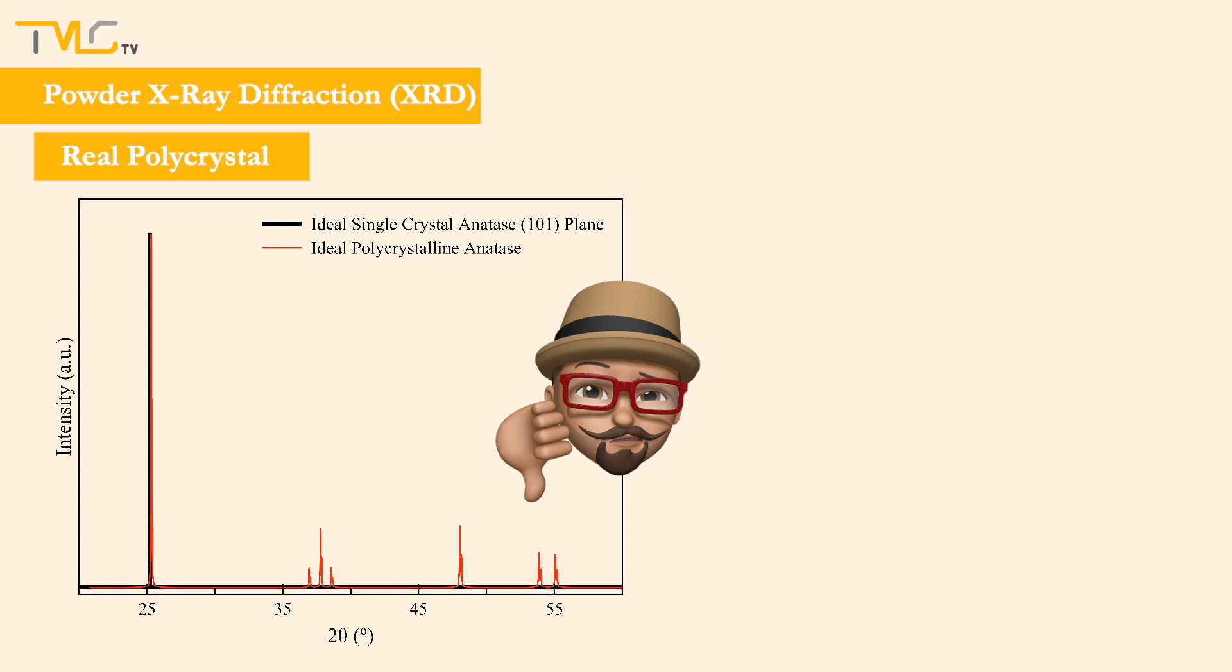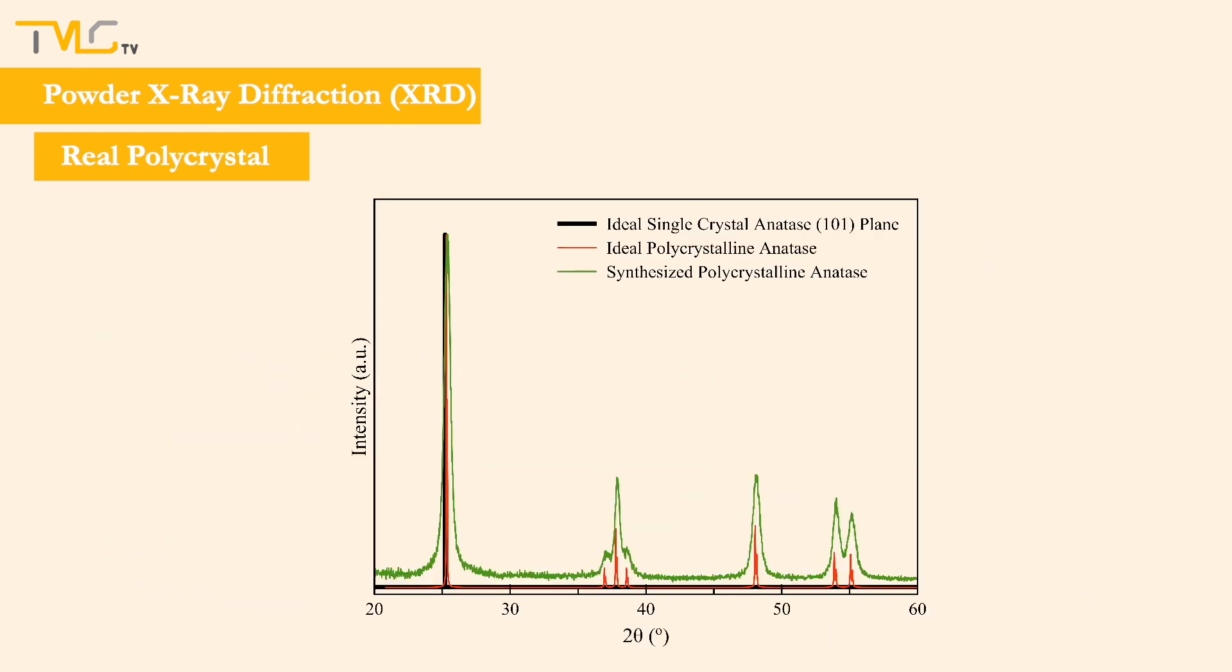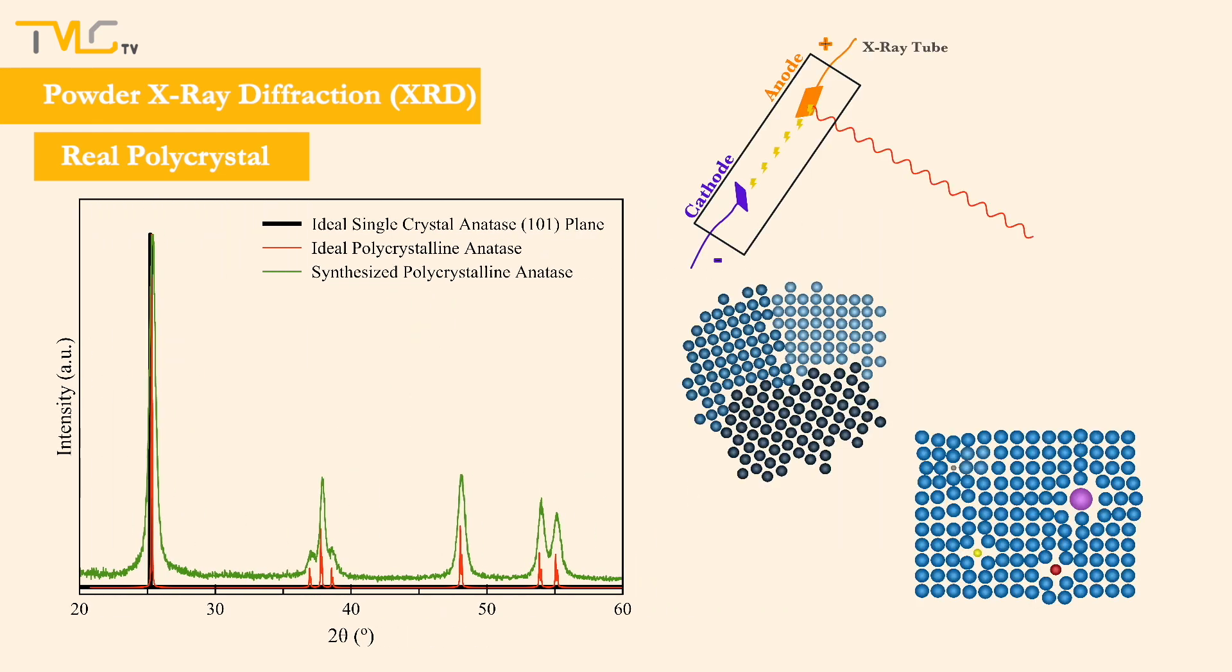During experiments, data deviates from ideal conditions as a result of systematic errors introduced by the diffractometer, and crystal defects such as grain boundaries, vacancies, impurities, etc. in the material. You may check video 1.3 for more details on crystal defects.